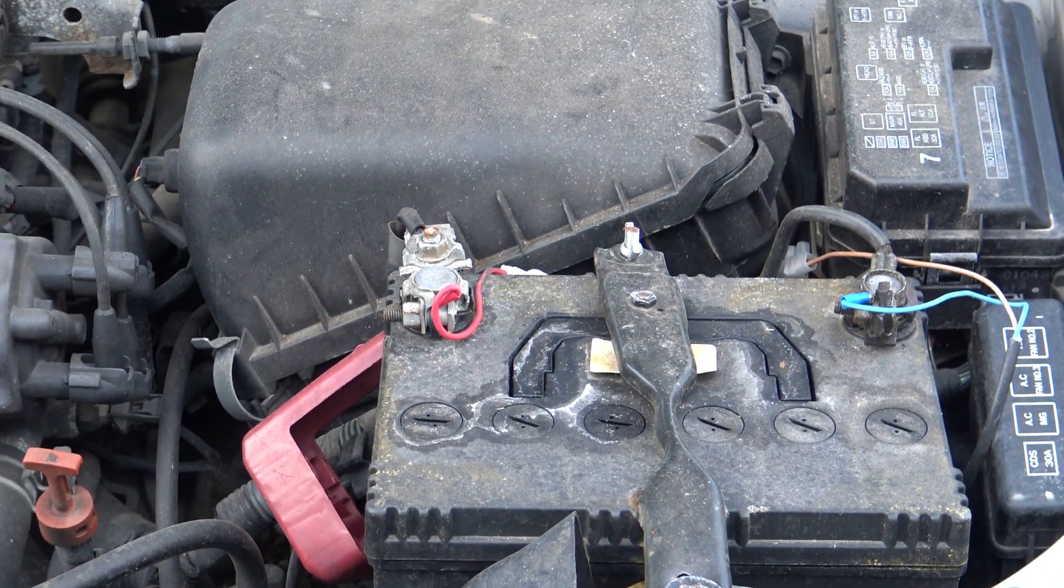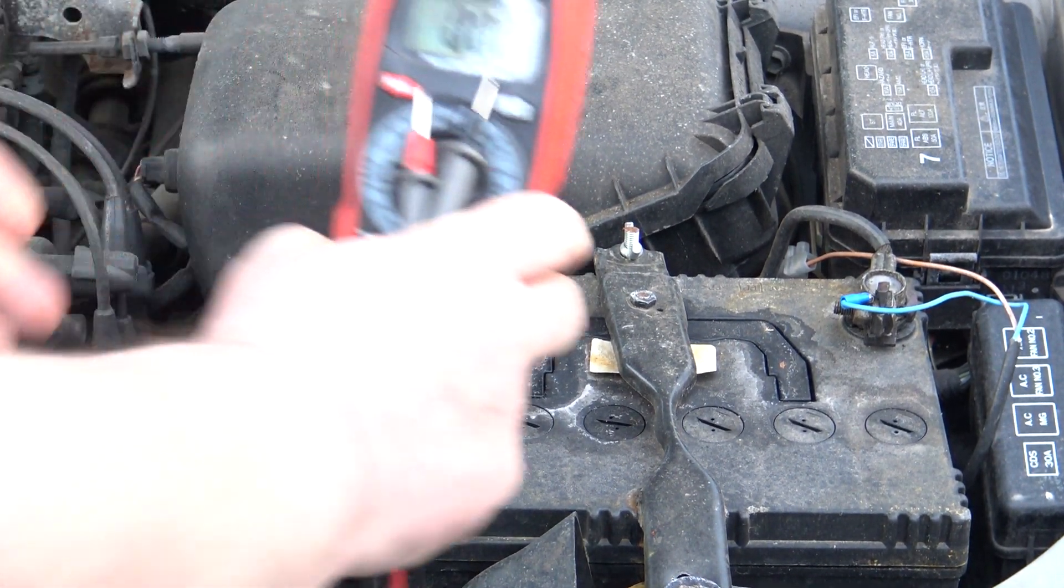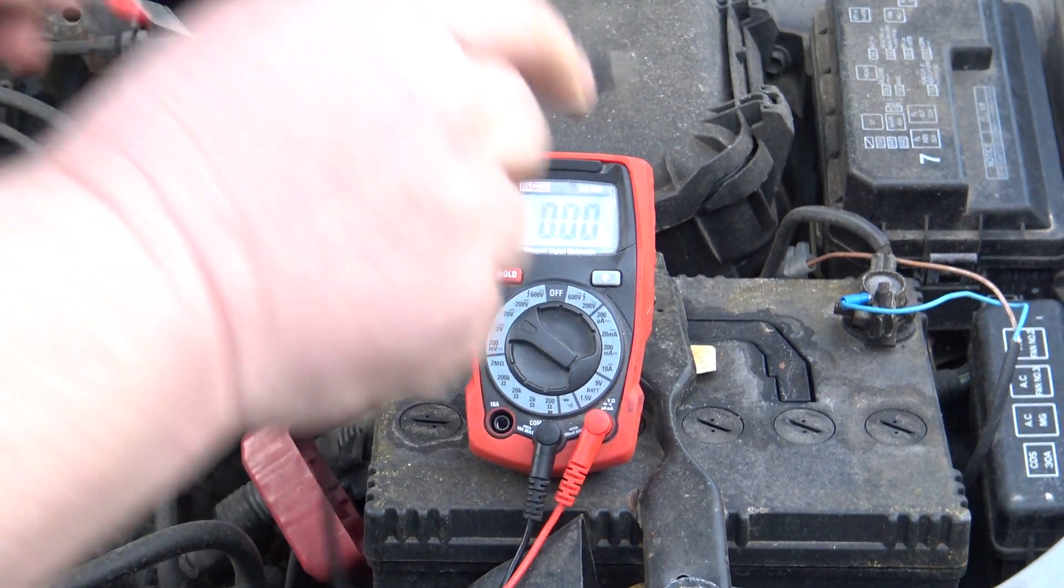So what we're going to do, we're going to put a volt meter here and we're going to see what volts the battery is right now. And if we can see that, it's 12.16.